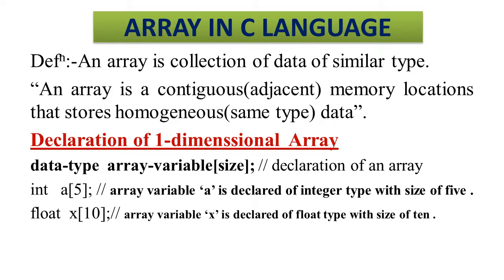Doosra — the second example: float x[10] semicolon. It means it will hold 10 values of float type.